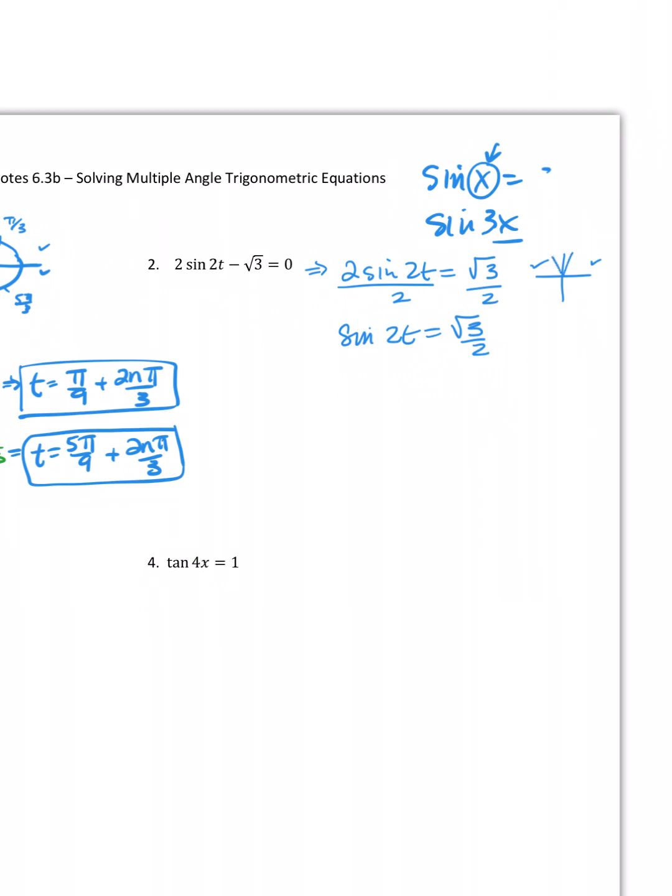Where is the sine square root of three over two? Well, that's up here at, let's see, that's pi over three, and this is two pi over three. Okay, so I'm going to set two t equal to pi over three, and then two t is equal to two pi over three.